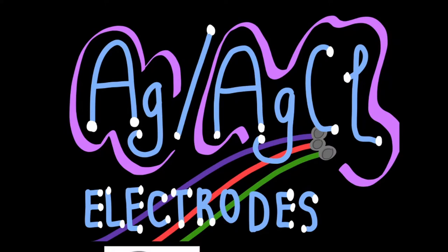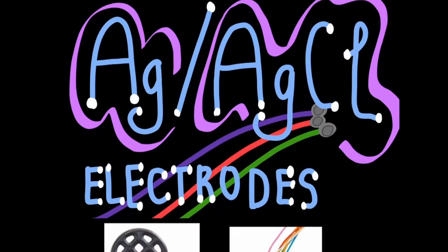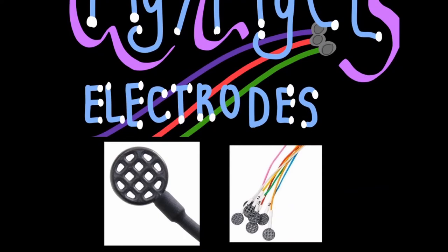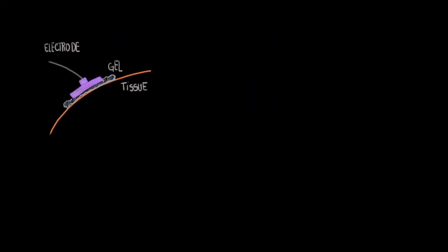The silver silver chloride electrodes, for example, can look like webbed disks connected to a cable. In standard bioengineering applications which you may have experienced firsthand at some point in your life, the electrode is placed on a tissue that has been wetted with a gel. Think of someone getting an EKG.